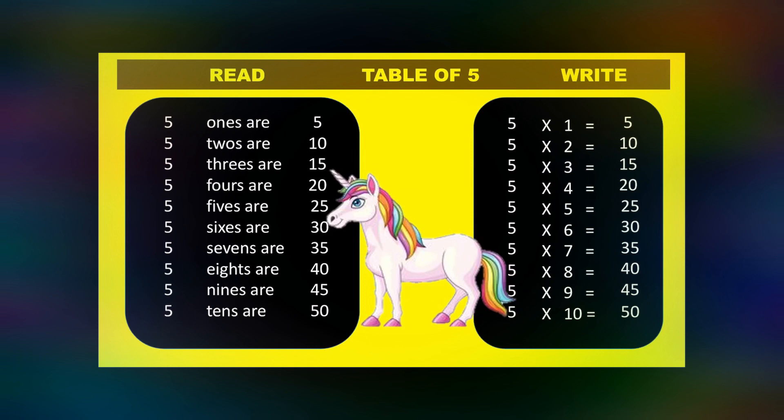Let's repeat it again. 5 1s are 5. 5 2s are 10. 5 3s are 15. 5 4s are 20. 5 5s are 25. 5 6s are 30. 5 7s are 35. 5 8s are 40. 5 9s are 45. 5 10s are 50.